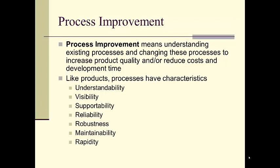Like products, processes have characteristics: understandability, visibility, supportability, reliability, robustness, maintainability, and rapidity. In terms of visibility, it's pretty difficult here at UH to get a list of all the organizational processes for UH Hilo. In 2009, I actually started documenting the ones that relate to the chair position for the Computer Science Department. Understandability is also lacking in almost all of the system-wide processes, so there are some areas where we can improve as an organization.